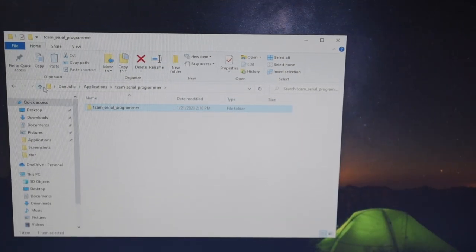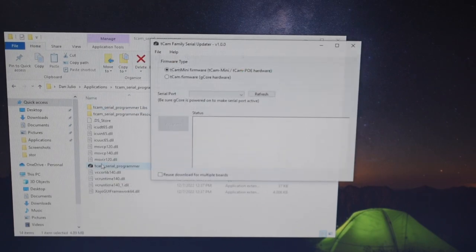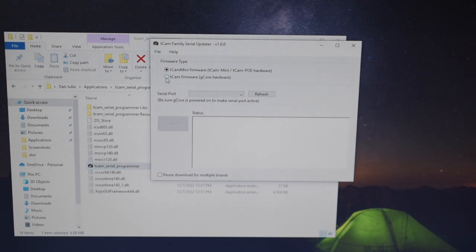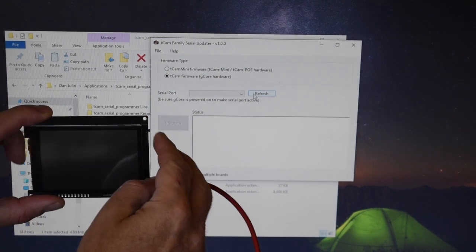After unzipping, you can run the program by opening the folder and double-clicking the TCAM serial programmer executable. Make sure to select the TCAM firmware type. Check the list of serial ports to see what you have on your computer.